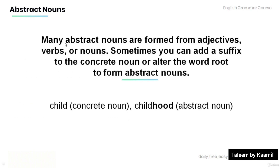Many abstract nouns are formed from adjectives, verbs, or nouns. Sometimes you can add a suffix to the concrete noun or alter the word root to form abstract nouns, as in the example below: 'child' is a concrete noun, whereas 'childhood' is an abstract noun.